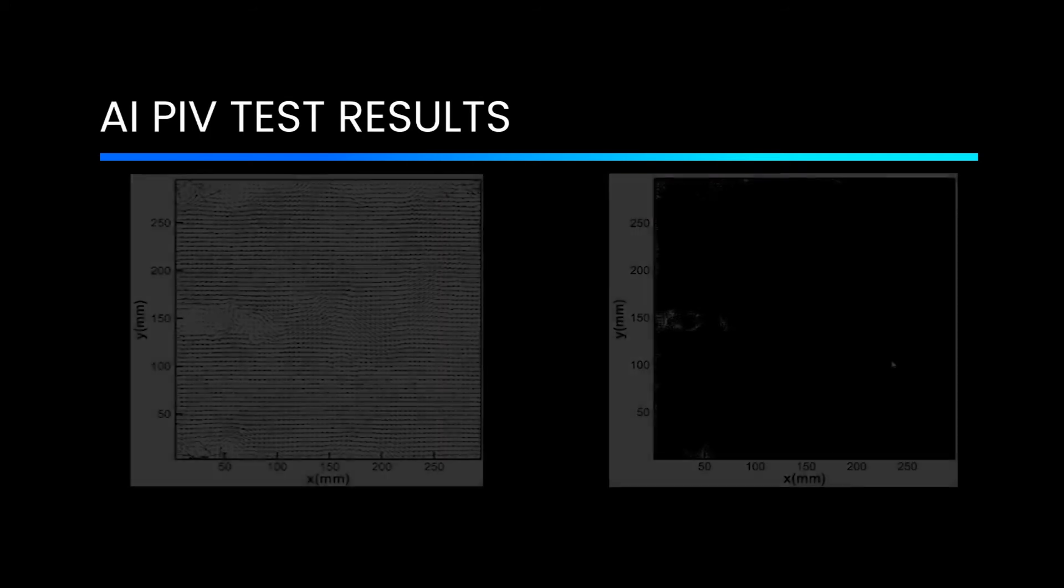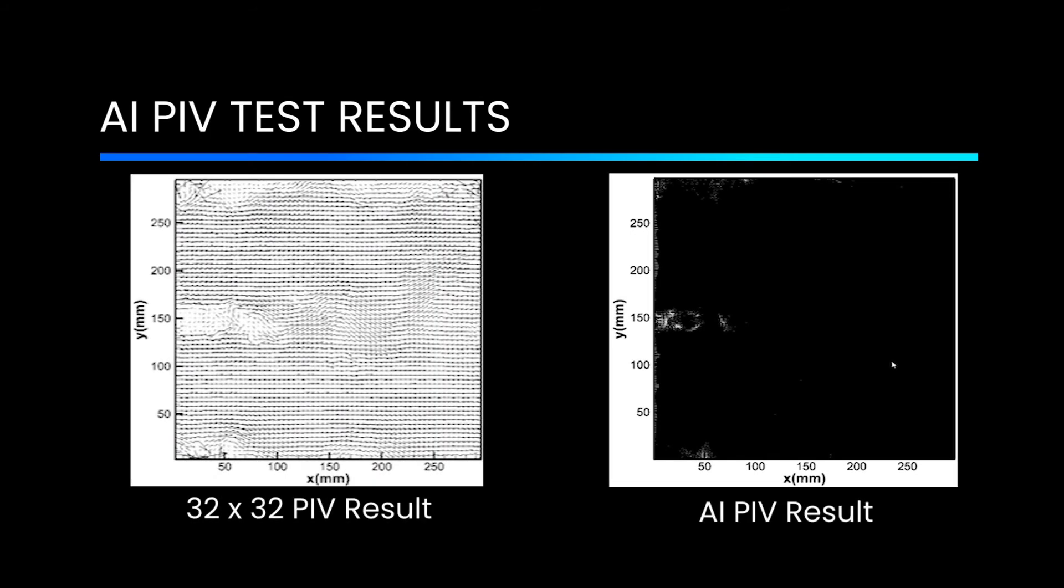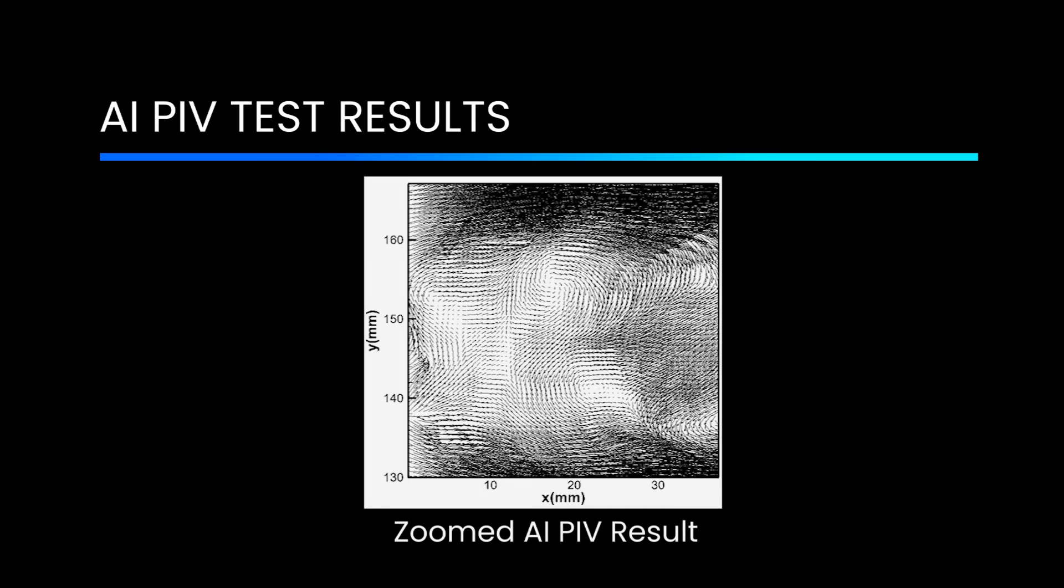In another example of a mini jet flow, the results are even more amazing. The black areas of the picture are black because they display all the vectors calculated with AI PIV software. If we zoom into the area of interest, the amount of detail is simply astounding.